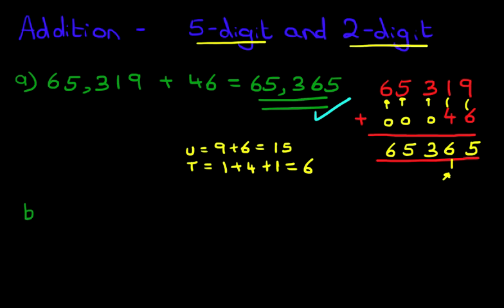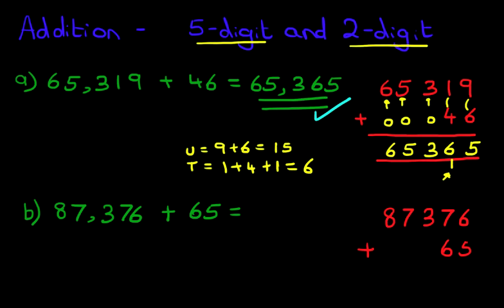This time we're going to do carrying twice. So we've got 87,376 plus 65. Now the first step is to rewrite this in the vertical format. So we've got 87,376 plus, notice how we write this down, 65.